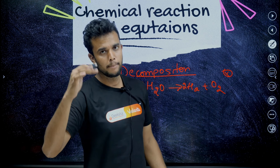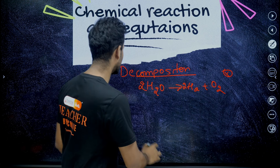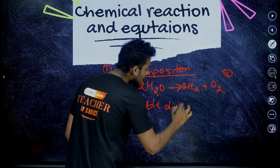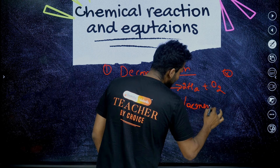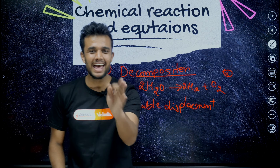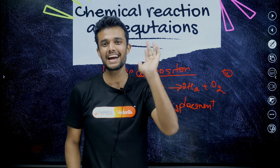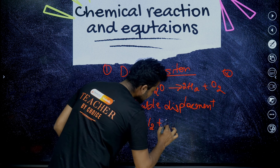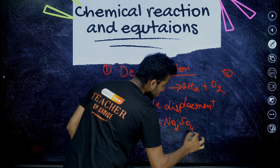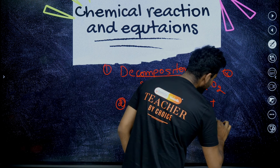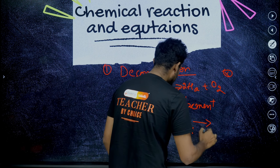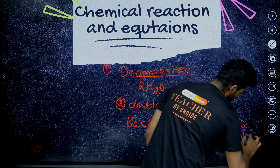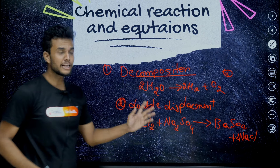The second very important reaction is double displacement reaction. They definitely ask a question from double displacement every year. The classic example is the precipitate reaction: barium chloride reacts with sodium sulfate — two ions get exchanged and yield one white precipitate, which is barium sulfate, along with sodium chloride.